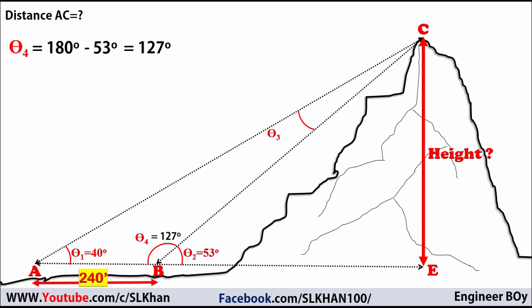That gives theta 4 equals 127 degrees. Now for theta 3: looking at triangle ACB, we have two known angles — theta 1 and theta 4. Since the sum of internal angles of a triangle is always 180 degrees, we subtract theta 1 and theta 4 from 180. That gives us theta 3 equals 13 degrees.